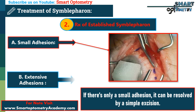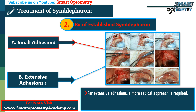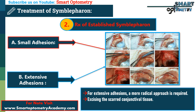b. Extensive adhesions. For extensive adhesions, a more radical approach is required. This involves excising the scarred conjunctival tissue and performing a mucous membrane graft to cover the exposed area. The mucous membrane can be sourced from the upper fornix of the opposite eye or the buccal mucosa.